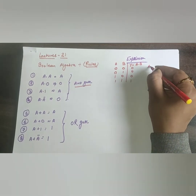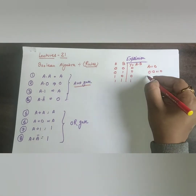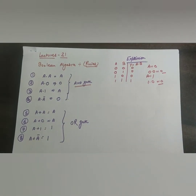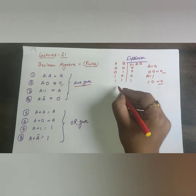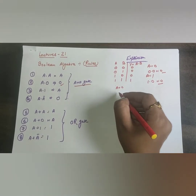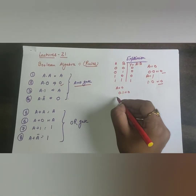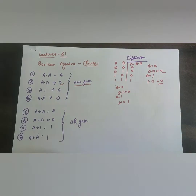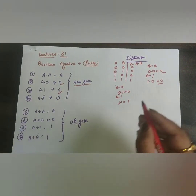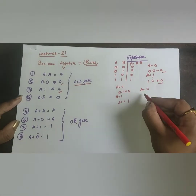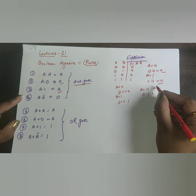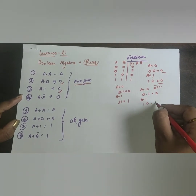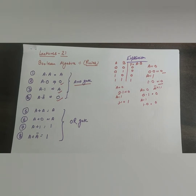For A·1: if A=0, 0·1=0; if A=1, 1·1=1. The output depends upon A, so A·1 = A. For A·Ā: if A=0, then Ā=1, so 0·1=0; if A=1, then Ā=0, so 1·0=0. In both conditions we get 0, so A·Ā = 0. This completes the AND gate rules.